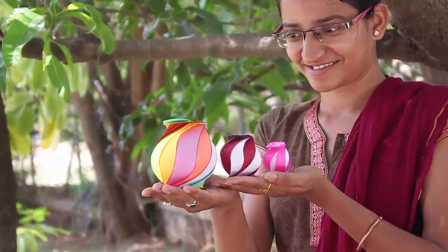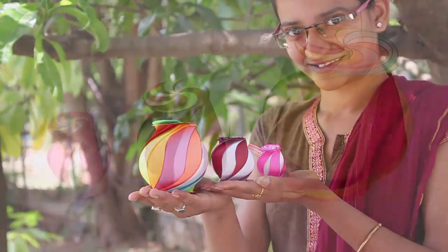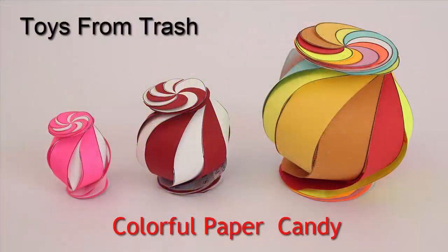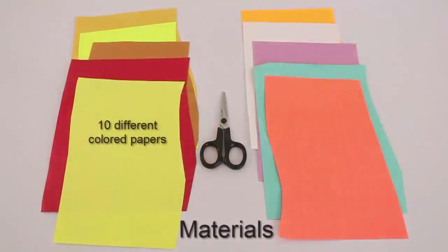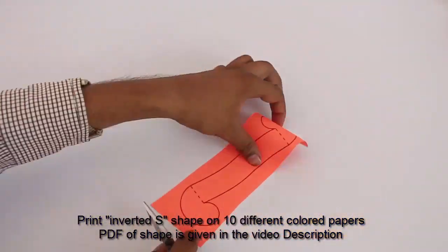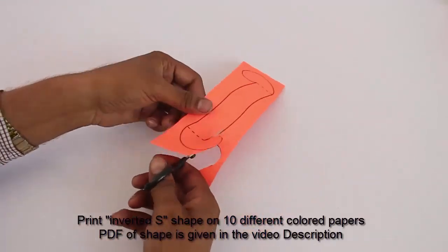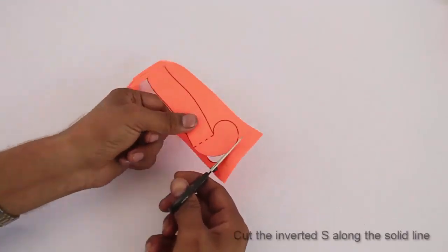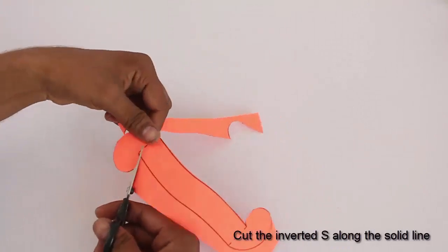To make this beautiful colorful paper candy, you need 10 different colors of paper and scissors. You need to first print an inverted S shape on all the 10 different color papers. The PDF of this shape is given in the do it section.